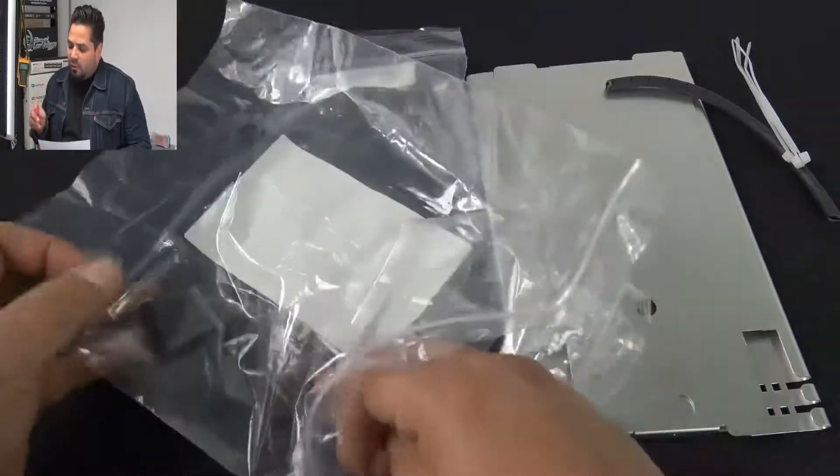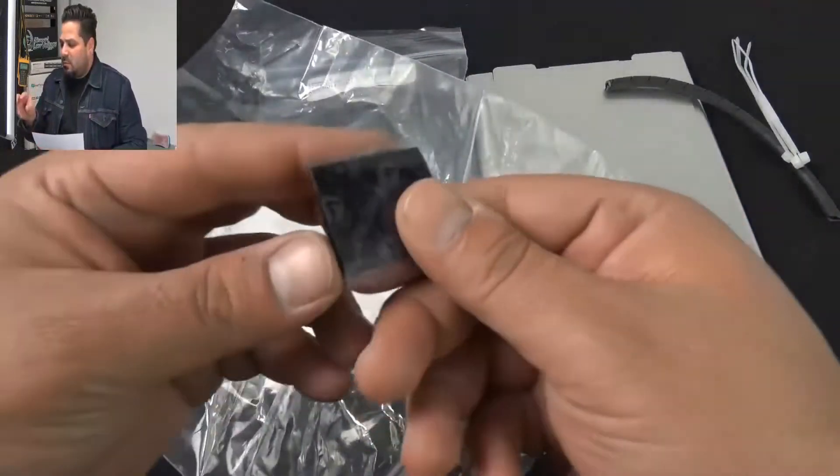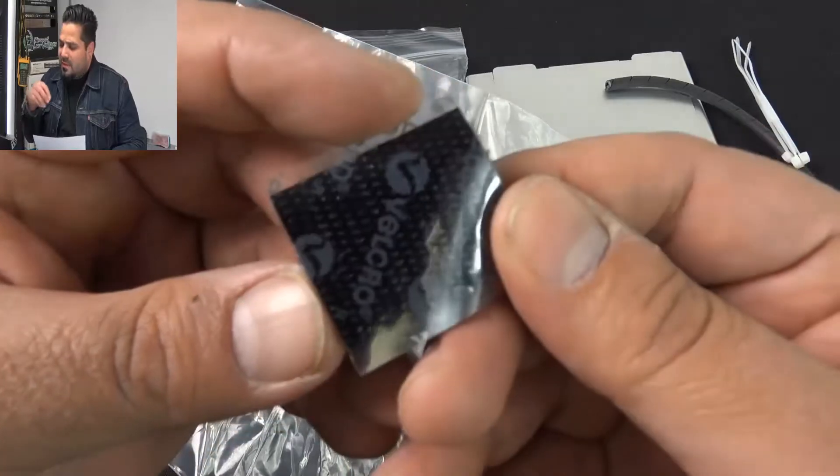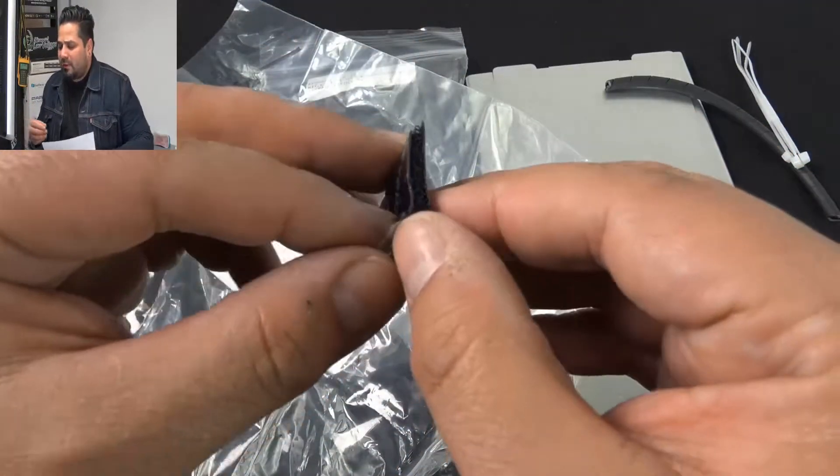And we have some velcro. This looks like it's got double sided, looks like it's got the sticky on one side, sticky on the other and it comes apart like that.